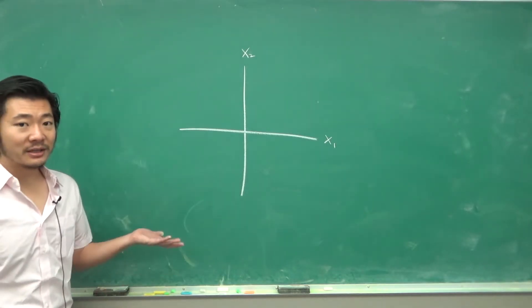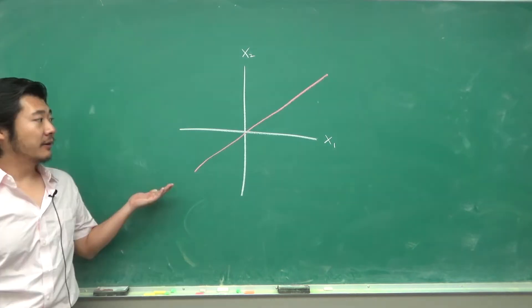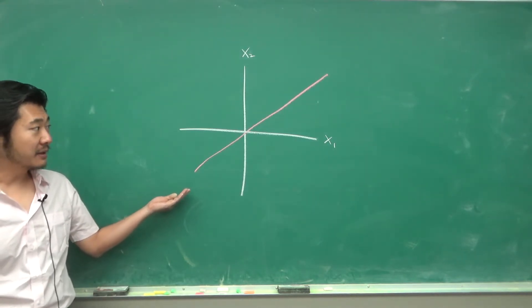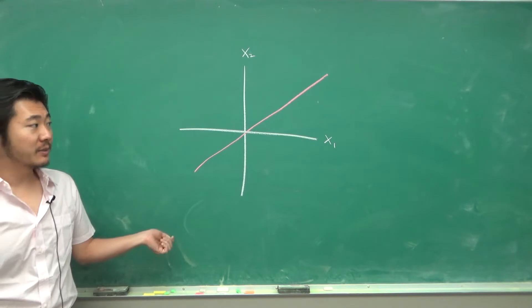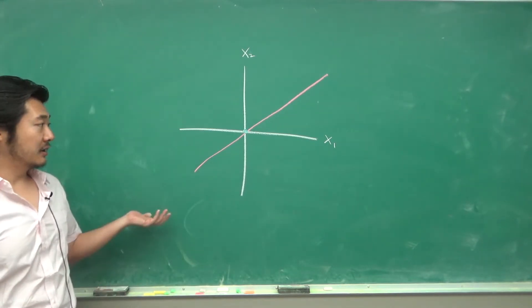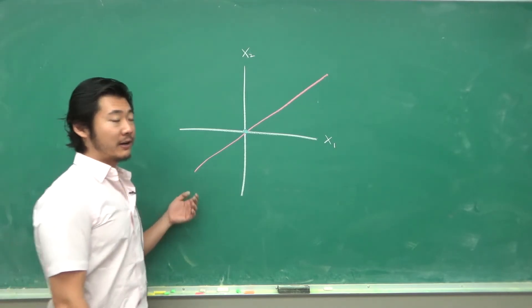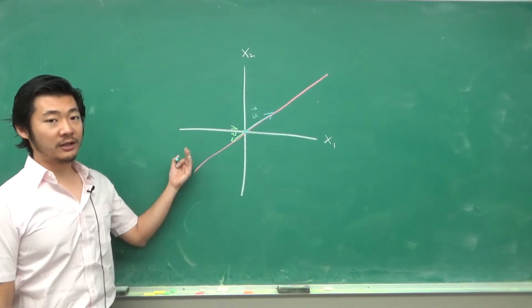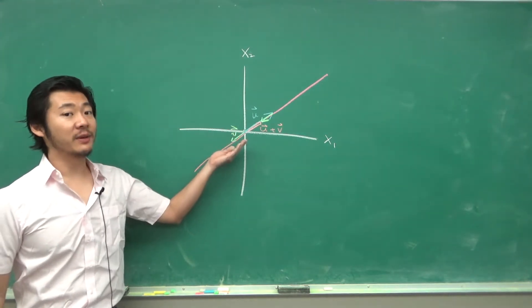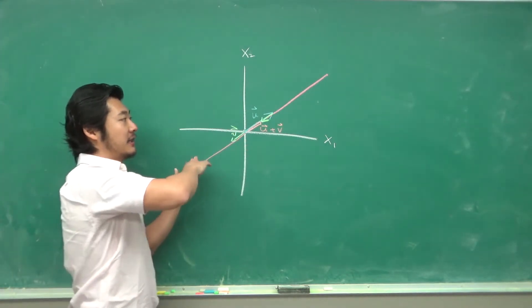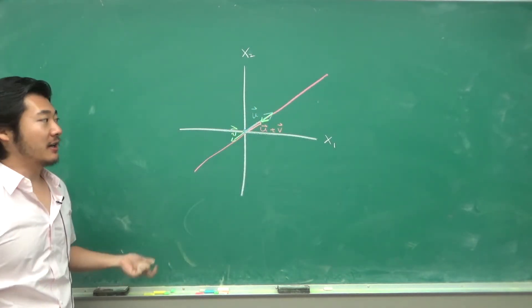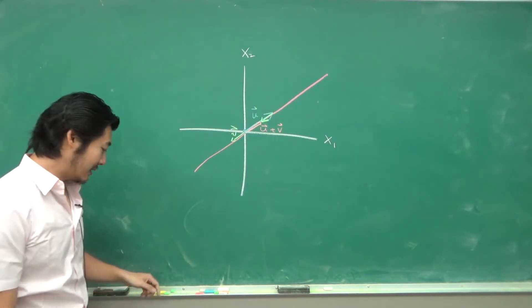Here's an example of a subspace — let's consider this line. This pink line would be a subspace of R2. We can see this because first the zero vector is contained in it. If we have one vector and another vector, we can add them together and it stays on this pink line. And if you shrink or stretch a vector, it stays on this pink line. So this is a subspace.